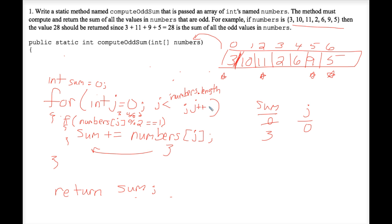Then we iterate around the loop again, j plus pluses. And that means that we're at the position one of the array. We're looking at this ten. Now we're asking if ten mod two is equal to one. It's not. That ten mod two is equal to zero. So this sum plus equals statement is skipped.